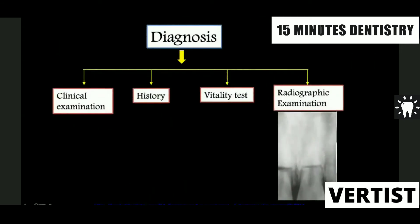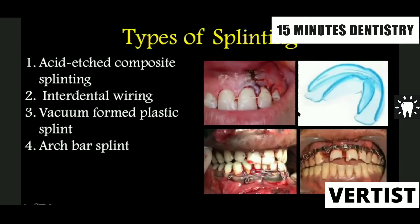Before you stabilize it, you do the clinical examination, history, vitality test. And when you see the x-ray, you can see the fracture of the roots. This is the way you stabilize it — use of splints, use of arch bars, or horizontal stabilization.